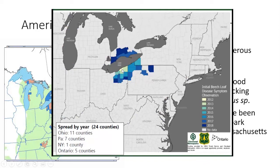The following year it was discovered in neighboring Ashtabula County as well as Geauga County, Ohio. The year after that, we started to see it in Cuyahoga County, Ohio — this is where Cleveland is located. Shortly thereafter it moved into northwestern Pennsylvania, and as of 2018 it was present in Chautauqua County in New York. It has now been documented in Erie as well as Cattaraugus County. So it is moving in a northeastern direction, which is the complete opposite of beech bark disease.